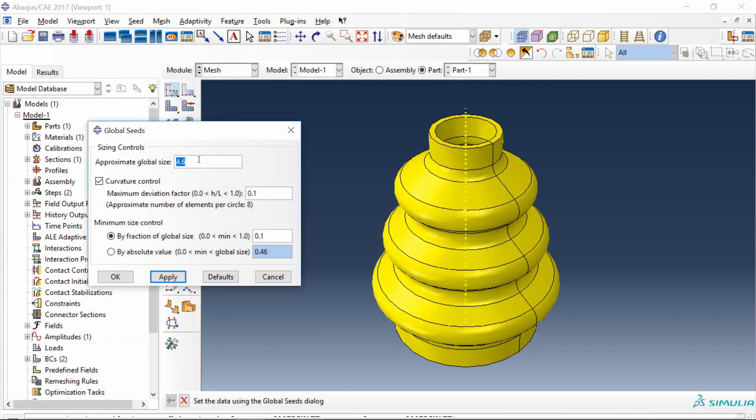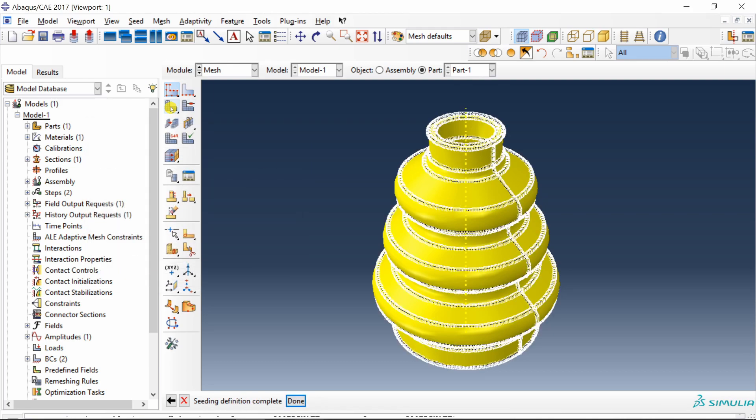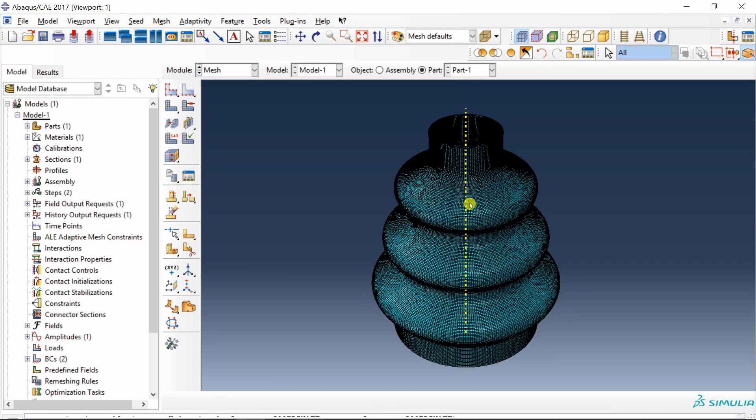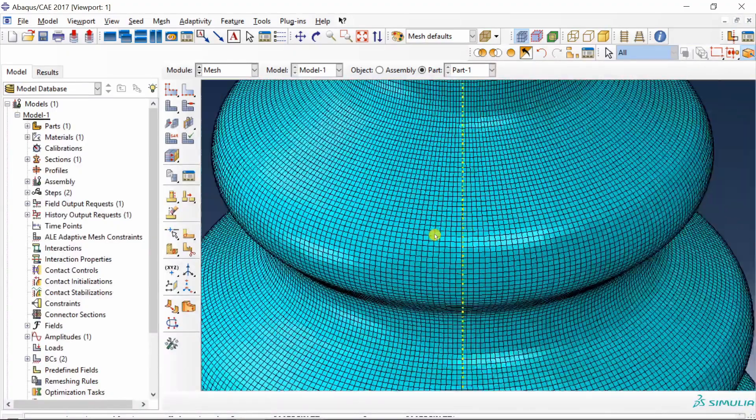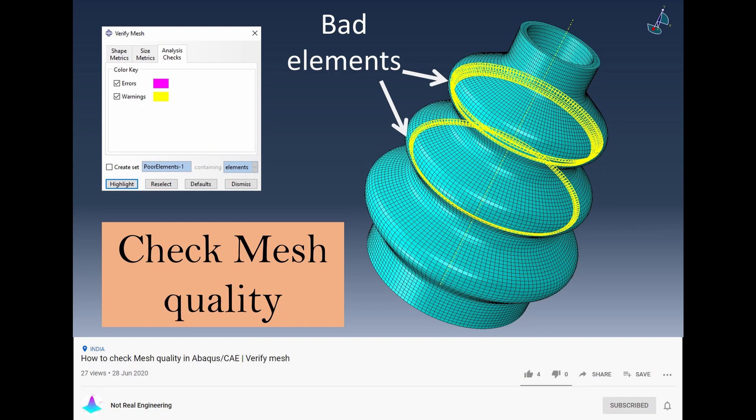Then let's seed the part with 0.5 and let's mesh it. I am keeping this fine mesh because we are applying large deformation. There is another video on this channel which talks about how to check quality of your mesh. So if you are interested, check that video as well.